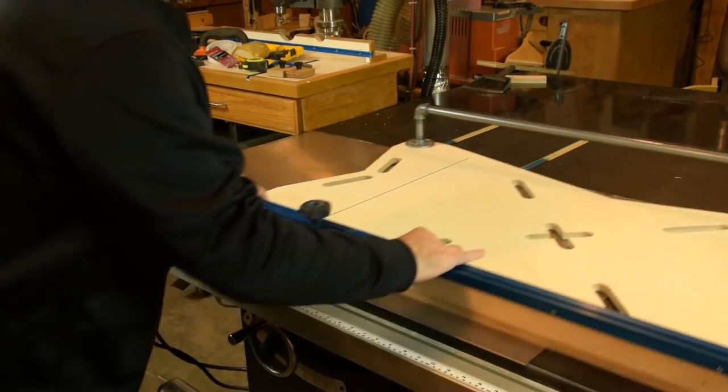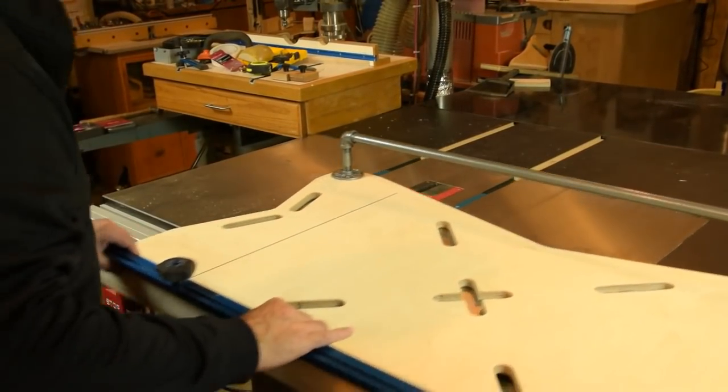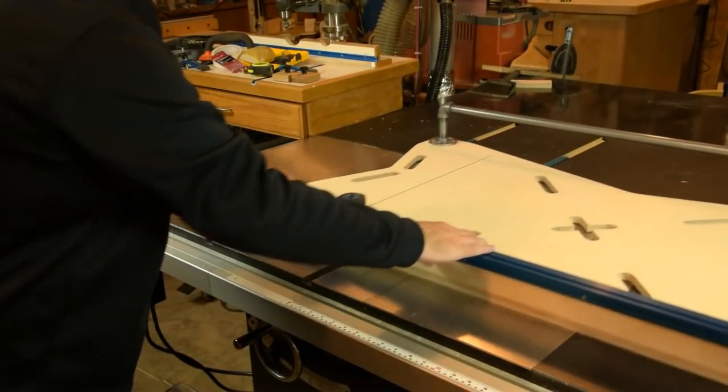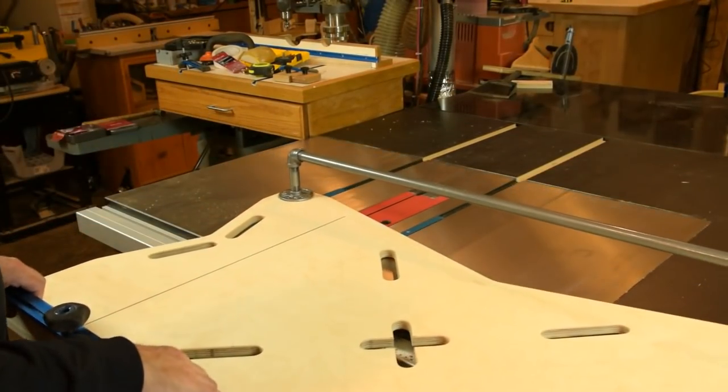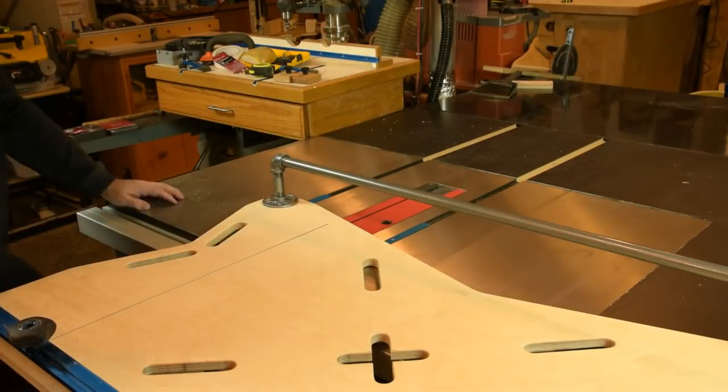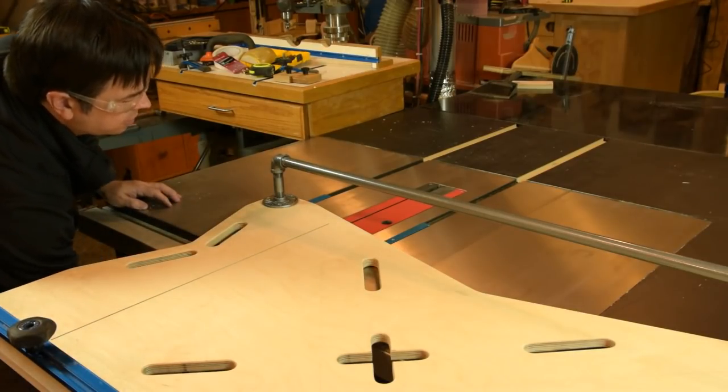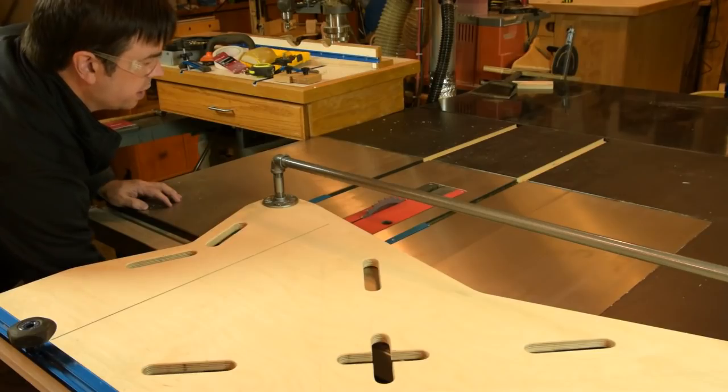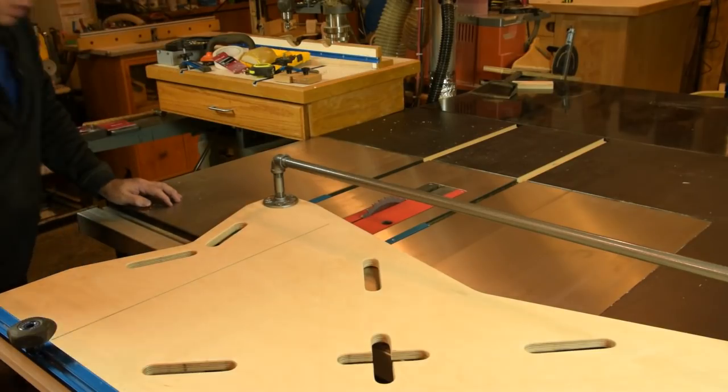Once you have the sled tuned and sliding smoothly, we can go ahead and raise the blade and complete the through cut. Let's do that now. Now, let's raise the blade up so it'll just complete the cut in the three-quarter sled and make that cut.